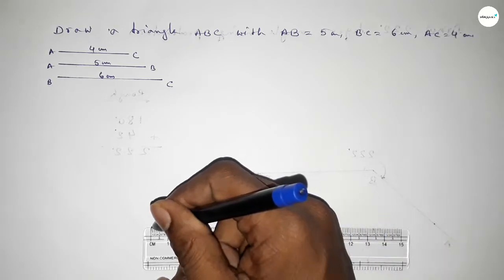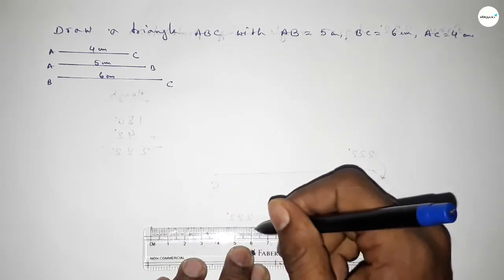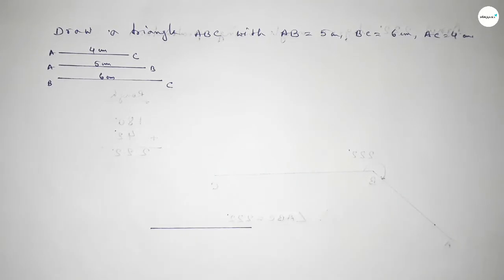Now we have to first draw here a line of length 6 centimeter. So this is 6 centimeter, and taking here B point and here C point.